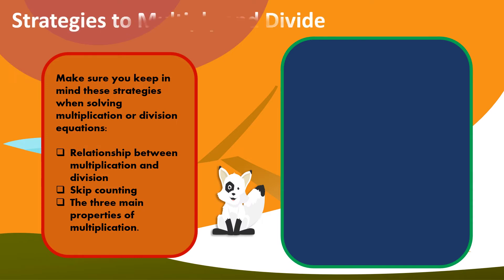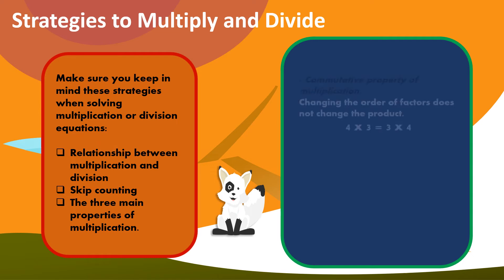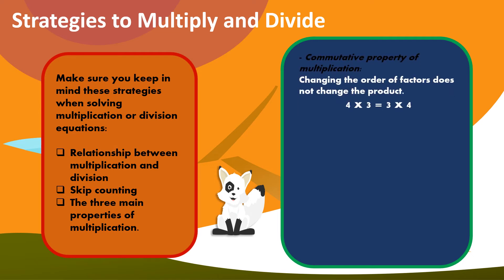Make sure you keep in mind these strategies when solving multiplication or division equations: the relationship between multiplication and division, skip counting, and the three main properties of multiplication. Here's a summary of these properties. Commutative property of multiplication: changing the order of factors does not change the product. For example, 4 x 3 equals 3 x 4.